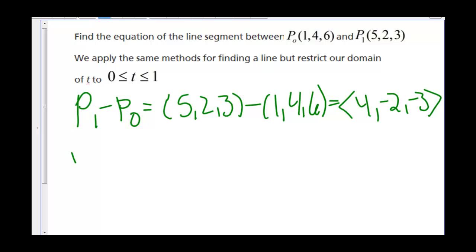So now we have R equals our point, and we'll use P0 as that point. So we'll do R = (1,4,6) + t(4,-2,-3).